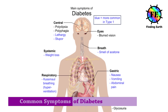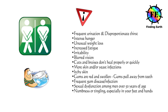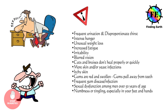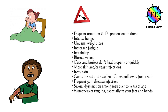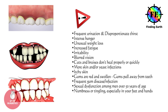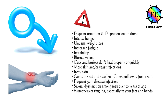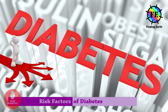Diabetes is the seventh leading cause of death in the United States. Common symptoms of diabetes include frequent urination and disproportionate thirst, intense hunger, unusual weight loss, increased fatigue, irritability, blurred vision, cuts and bruises that don't heal properly or quickly, more skin and yeast infections, itchy skin, gums that are red and swollen or pulled away from teeth.